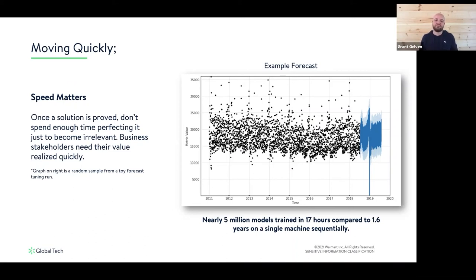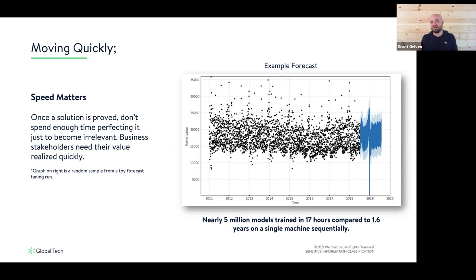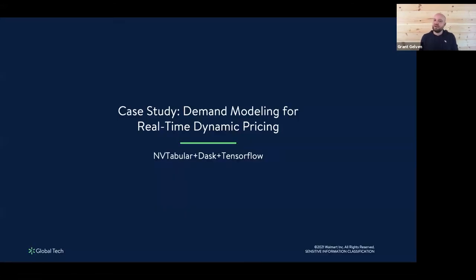In the end, for this particular project, we trained roughly five million models in this hyperparameter search. In terms of CPU runtime we did this in about 17 hours, compared to over a year on a single machine — which actually wasn't too long ago when people were doing that. Using Dask we were able to put this project together, build these models, and have an answer in a matter of just a few weeks in working hours.